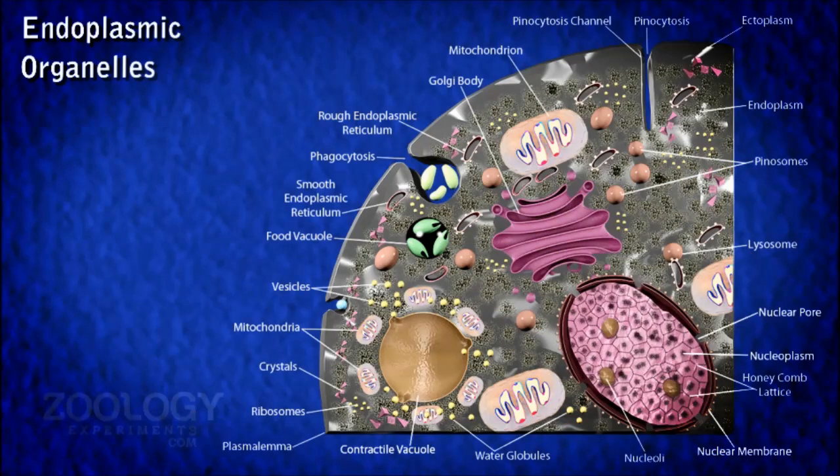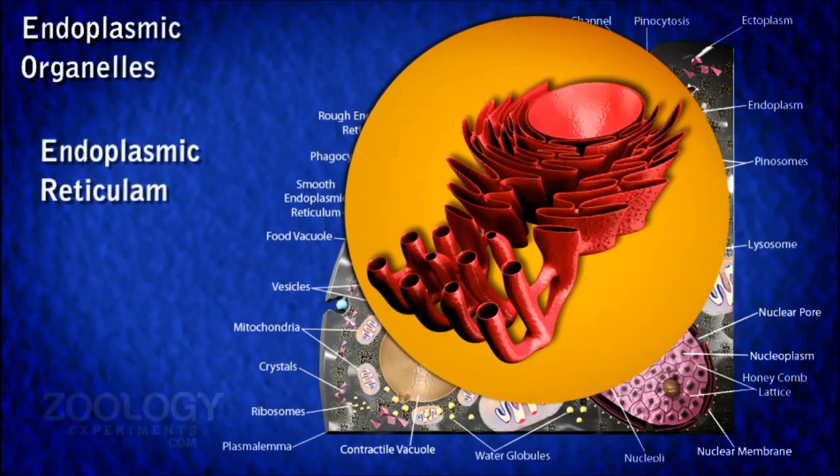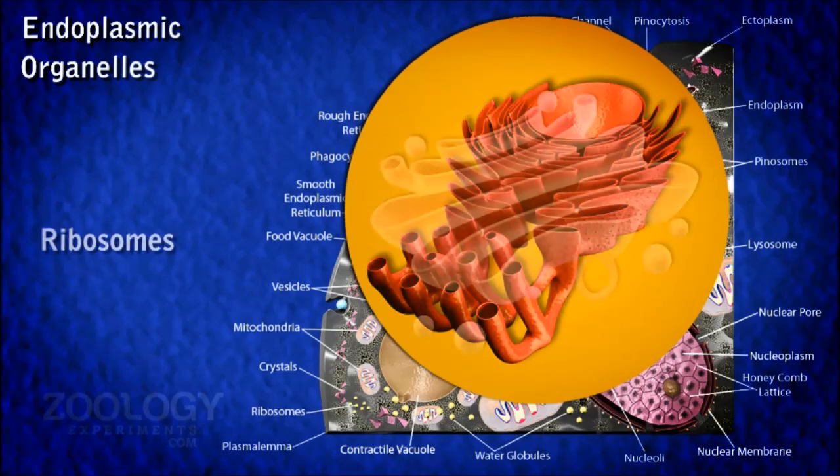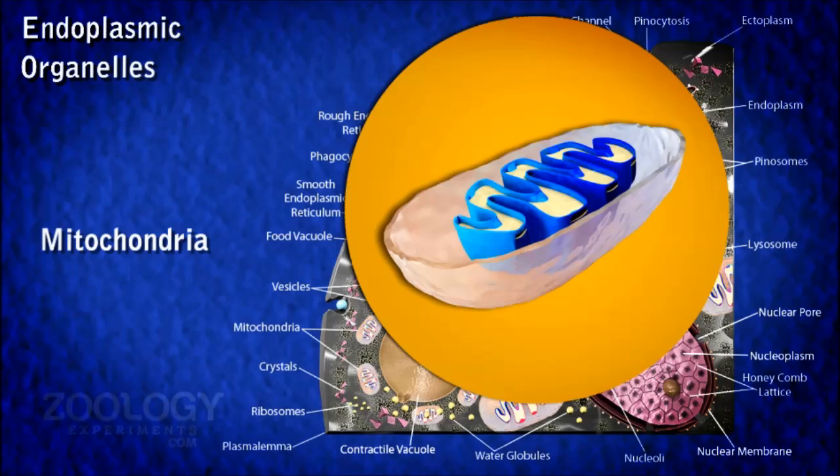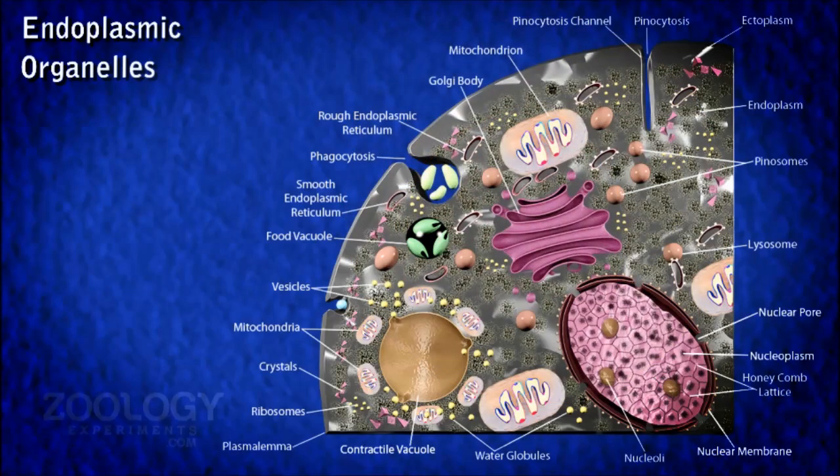Water Globules. These are several small and spherical vacuoles filled with a colorless fluid. Some other organelles like endoplasmic reticulum, ribosomes, Golgi bodies, mitochondria and lysosomes are also found in the endoplasm of the cells.